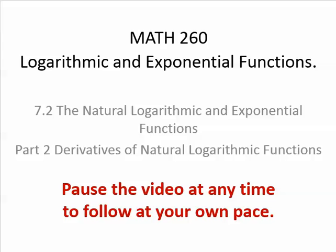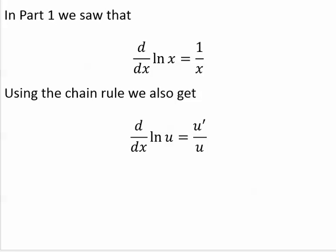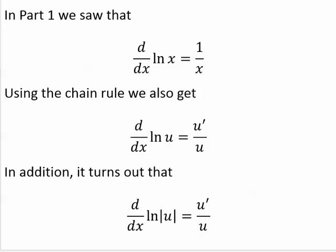Derivatives of natural logarithmic functions. In part one, we saw that the derivative of ln x equals 1 over x. The chain rule says that the derivative of ln u is u prime over u. It also turns out that the derivative of the log of the absolute value of u equals u prime over u.